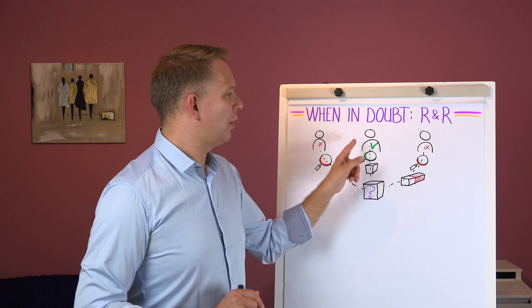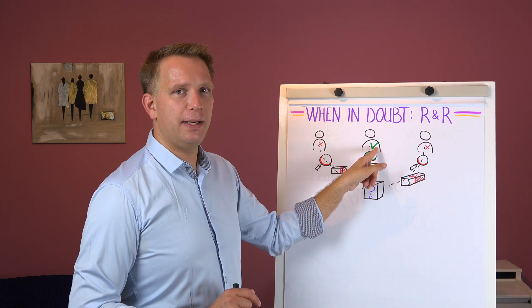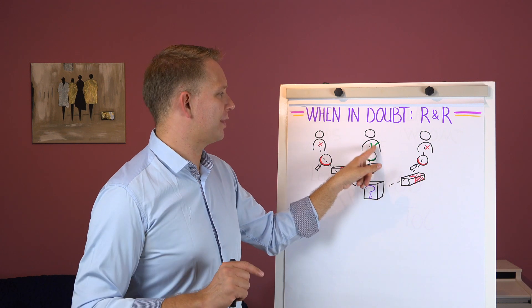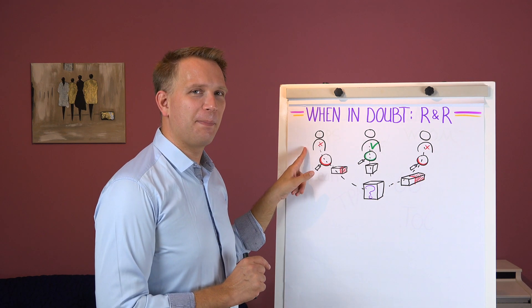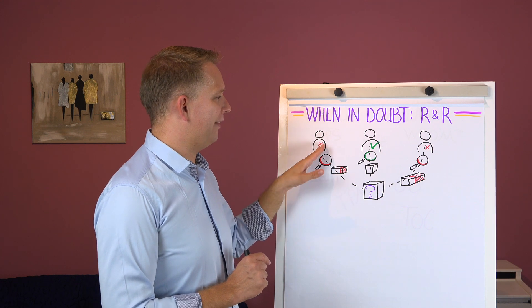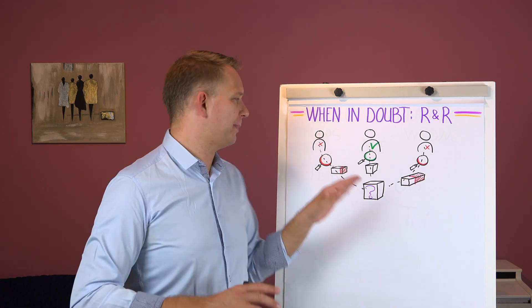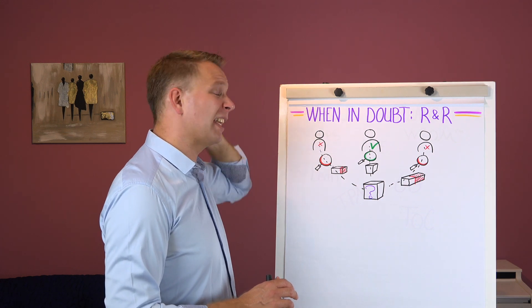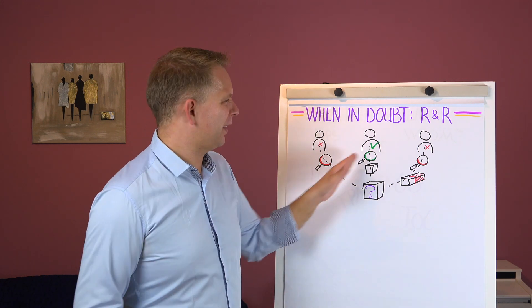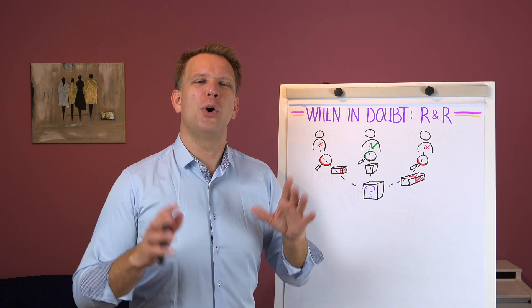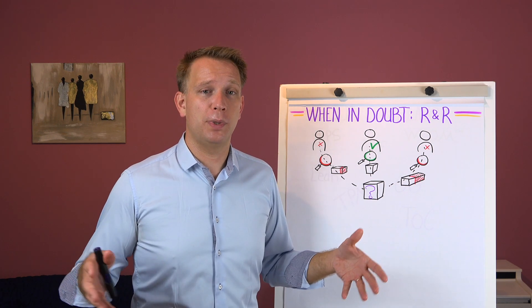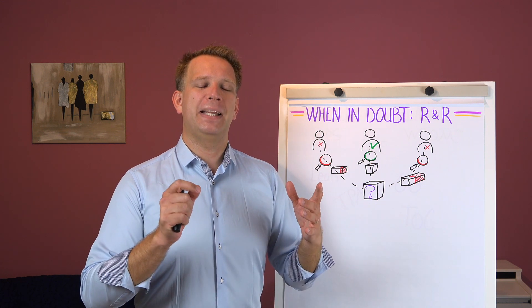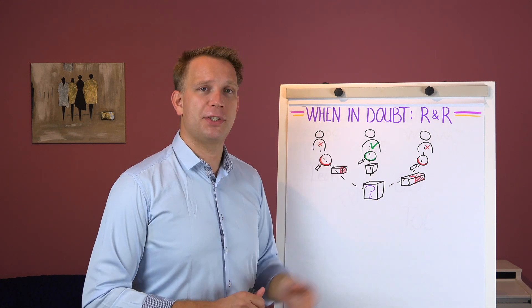But also will assessor B get at least on average the same results as assessor A? So even if there is some difference between the measurements that assessor A does, if they repeat it four times they only get slightly different results, we expect that assessor B will also get different results when they assess that same product four times. But is the average between them the same? Then it is repeatable.